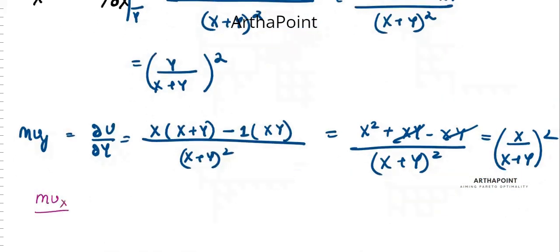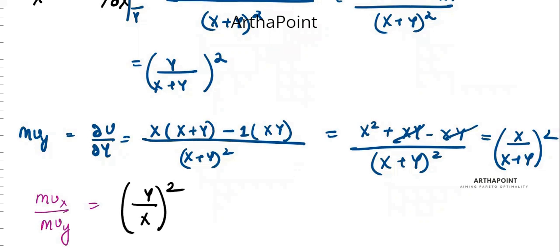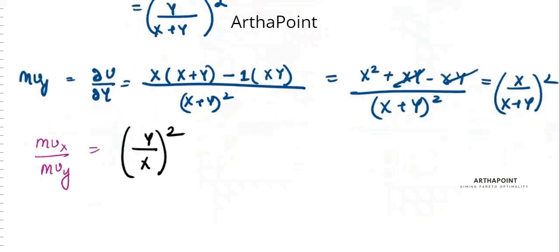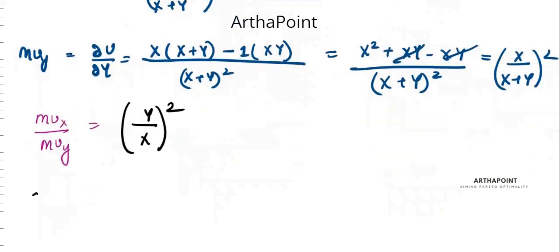Now MUx by MUy is going to be y squared by x squared. This is your MRS, and it is asking how this will change — how MRS changes as x changes.